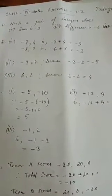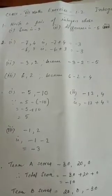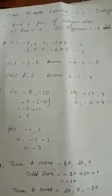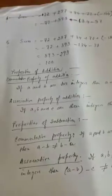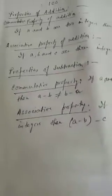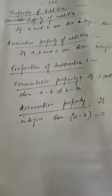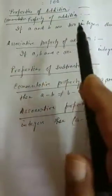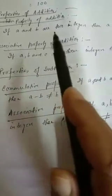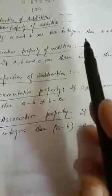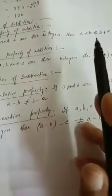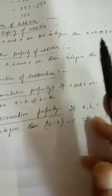Today we are going to solve sums from Exercise 1.2. Before solving these sums, you have to know some properties of addition and subtraction of integers. The first one is known as the commutative property of addition, which tells that if a and b are two integers, then a plus b will be equal to b plus a. Both sides the sum will be the same — you can write it either way.